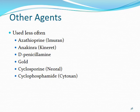Less commonly used DMARDs for RA include azathioprine — often used for transplant rejection prevention — d-penicillamine (structurally related to penicillin), gold-based compounds, cyclosporine (another transplant drug), and cyclophosphamide. These are more often utilized for other autoimmune conditions like lupus nephritis.